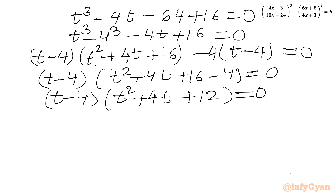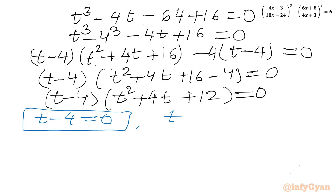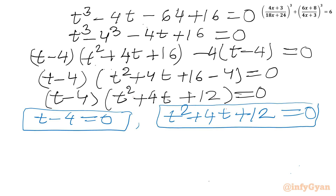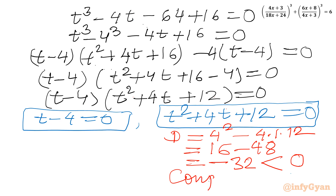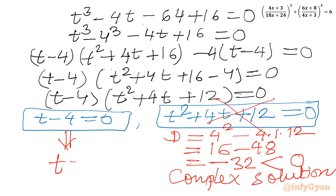So we can conclude from here: either t − 4 = 0, or t² + 4t + 12 = 0. Let us check the discriminant for the quadratic: D = b² − 4ac = 4² − 4(1)(12) = 16 − 48 = −32. Since D is negative, we reject this quadratic equation. From here we conclude t = 4.